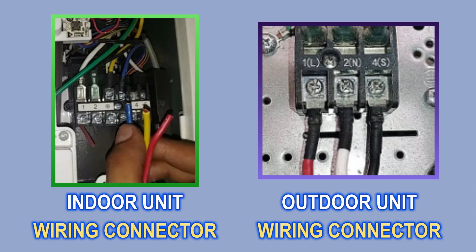The first reason may be the supply wire going to your indoor unit and outdoor unit. You should look at the connector of the indoor unit and the connector of the outdoor unit — there should be the same color code. If the same color code wire is not installed in the connectors of both units, you will get this error.